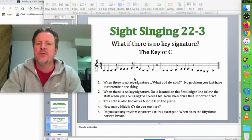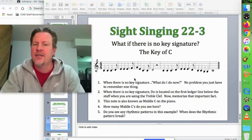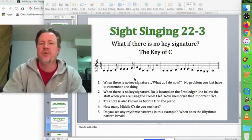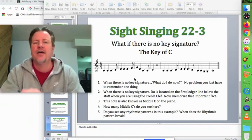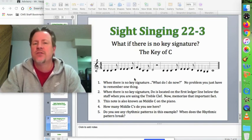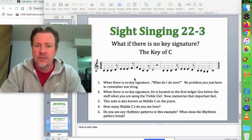So you won't be able to use the key signature to find any particular note. But when there's no key signature, you know where middle C is, so then you can use that as your reference. Okay, so that is tutorial 25: no key signature.